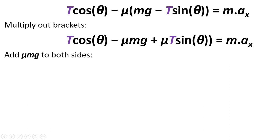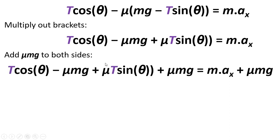Next we're going to add mu mg to both sides. And that means that mu mg will cancel on this side. Because it's minus mu mg plus mu mg. So we just get this equation here.